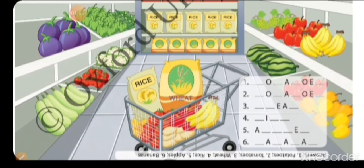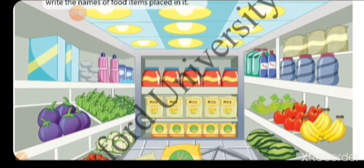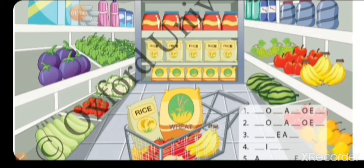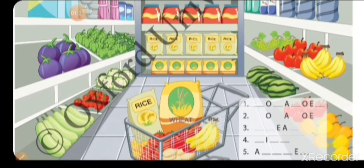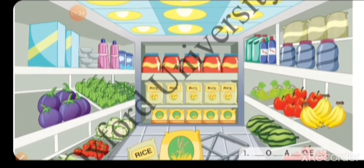Now children, open your book page number 36. Look at the picture — उसमें different different types की vegetables हैं, fruits हैं। वो सभी एक प्रकार की नहीं हैं — vegetables अलग अलग प्रकार के होते हैं और वैसे ही fruits भी different different types के होते हैं।